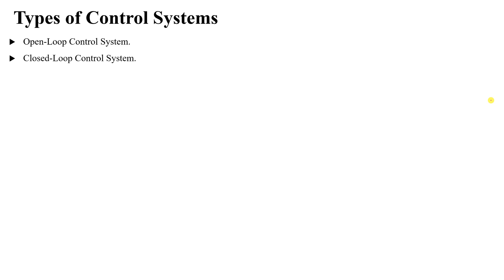To do this, we have two types of control systems: the first is called an open-loop control system, and the second is a closed-loop control system. Let's look at these types and compare between them.